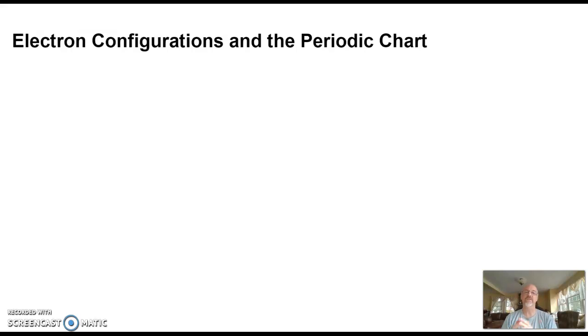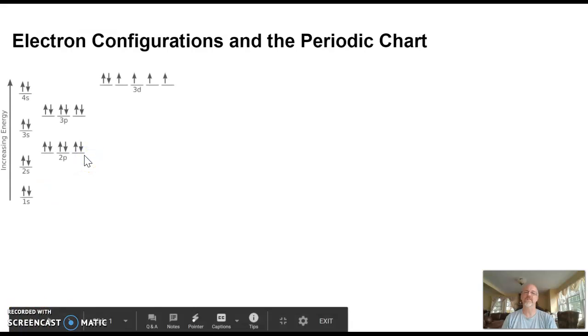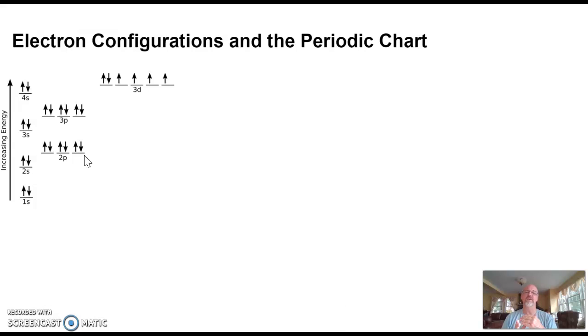In this video we're going to talk about writing electron configurations and how that links to the periodic chart. When it comes to electron configurations, we have a pattern. As we increase in energy, we have different orbital possibilities as you increase the energy level.